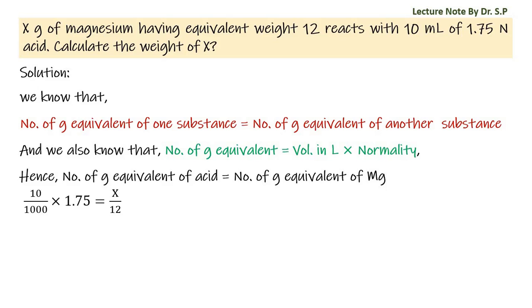Accordingly, we get 10 by 1000 into 1.75 is equal to X by 12.